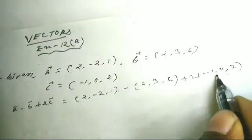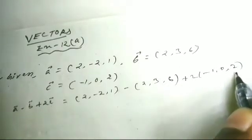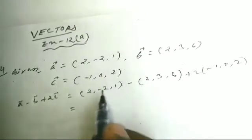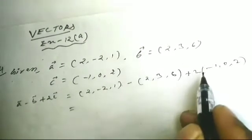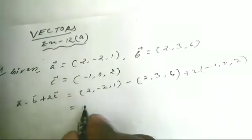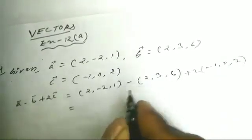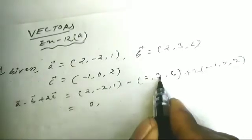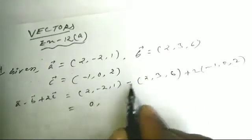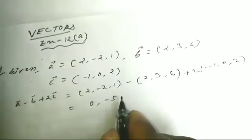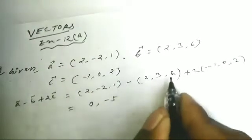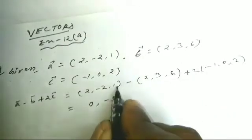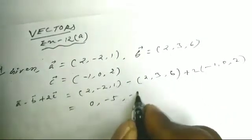Computing 2c: 2 into (-1, 0, 2) gives (-2, 0, 4). Then simplifying a minus b plus 2c: combining components gives minus 2, minus 5, and minus 1.